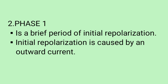Phase 1 is a brief period of initial repolarization. Initial repolarization is caused by an outward current, in part because of the movement of potassium ions out of the cell, and in part because of a decrease in sodium conductance.